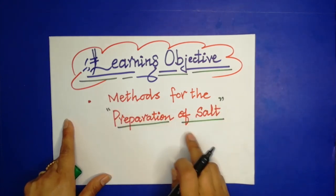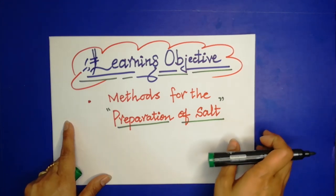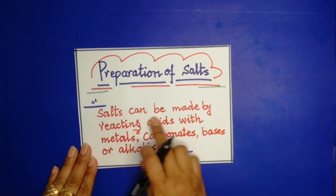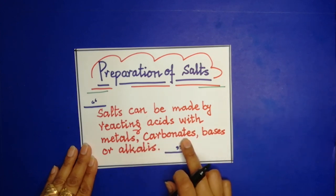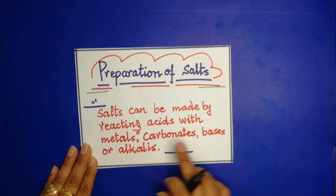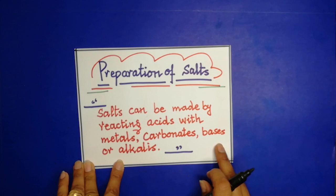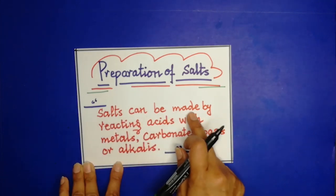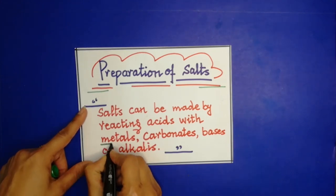There are three methods. In this lesson you will understand all three methods for the preparation of salt. How are salts formed? Salts can be made by reacting acids with metals, with metal carbonates, bases, or alkalis. These are all reactions of acids, which we have learned in the previous lesson on acid bases. If you want to see that lesson, you can click the website button given under this video.